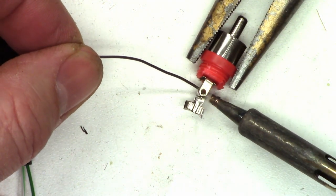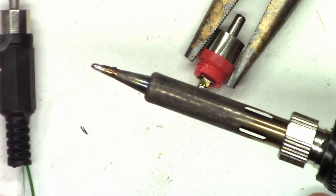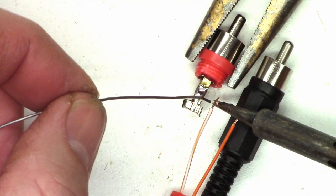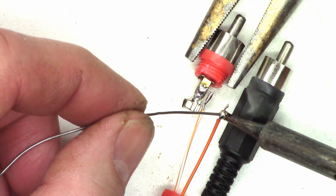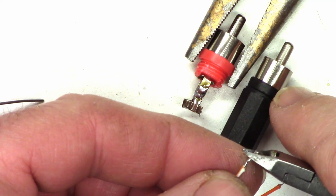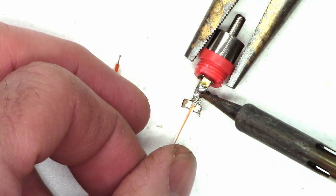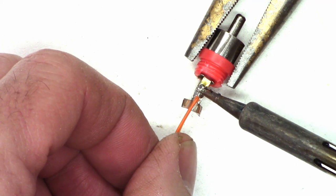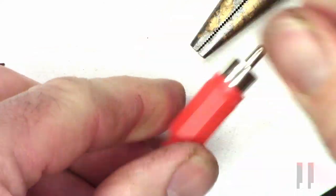So I want to pre-tin the leads. Don't keep heat on those too long. They will melt very easily. And once again we'll trim those off. So once again the orange white becomes the ground. Now the orange becomes the hot. And we'll slip the cover back on it. And there we go.